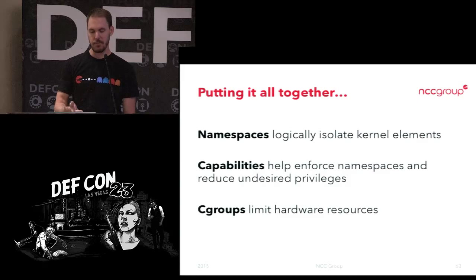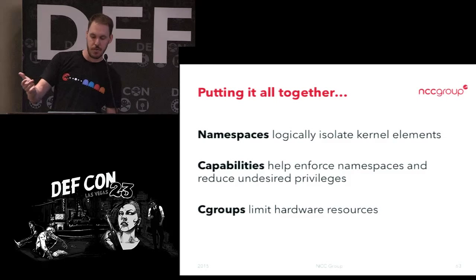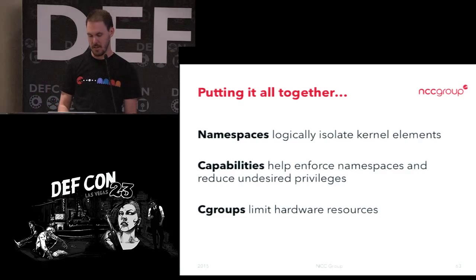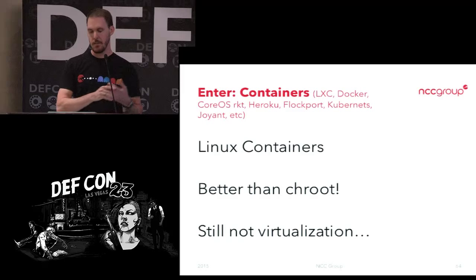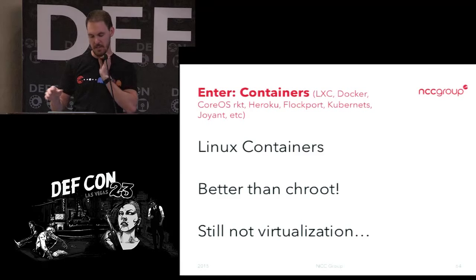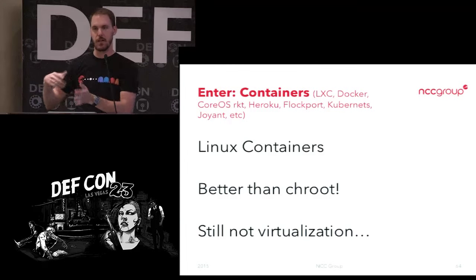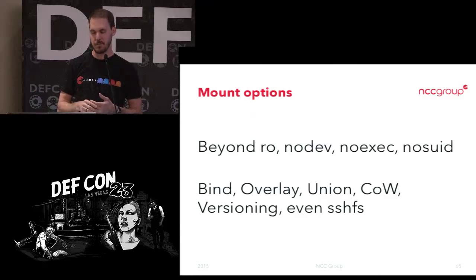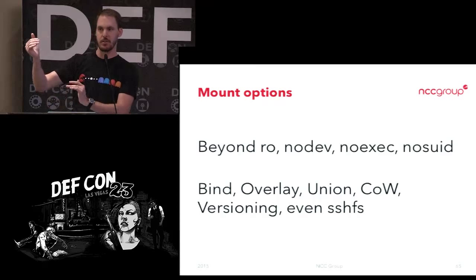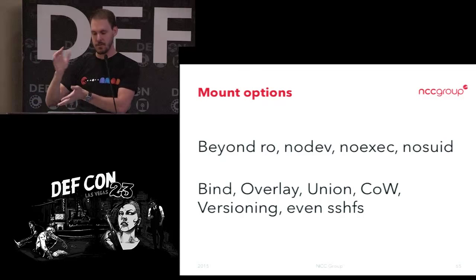When you put that all together: namespaces isolate the elements of the kernel, capabilities help enforce those namespaces and limit what a container can do with root, and cgroups limit resource access. Those three elements along with some other magic sauce create containers — and it is better than chroot. You get special mount options, you can do things like an overlay filesystem where part of the directory is shown to the container and part to the host with some in-between. You can do crazy stuff with SSHFS now.